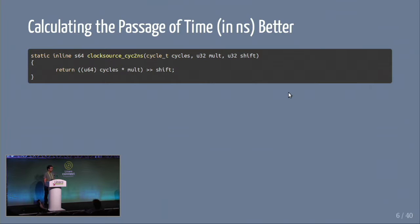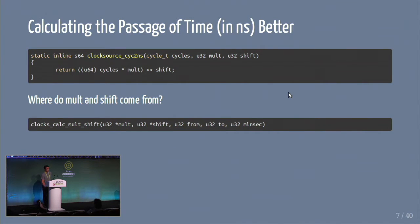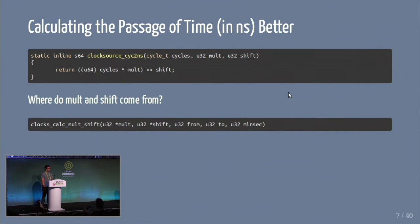So we can do a mult-shift operation to make this faster. The function used in the kernel is called clock-source-cyc-to-ns, which takes a mult-shift value and tells you how many nanoseconds a cycle count is. The mult-shift is calculated by a function called clock-calc-mult-shift. The mult is cheaper than division, and the shift is cheaper than division because it's just a division by a power of two. This also avoids all the floating-point issues. The only limitation is a slightly restricted conversion range due to the mult-shift values.